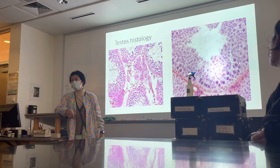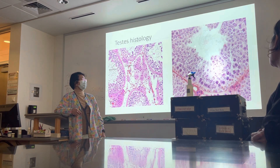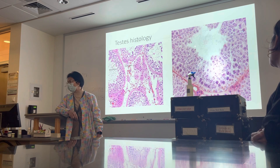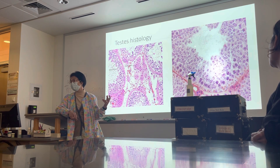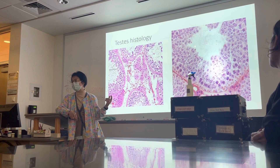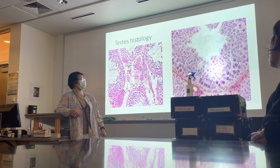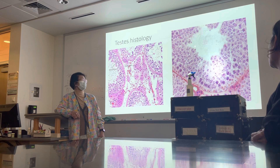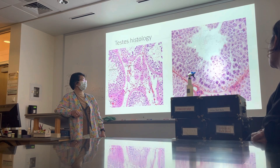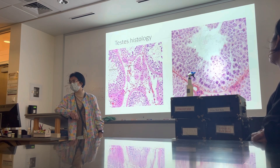In the lab exam, if the pointer is pointing there, you know the questions are related to the two cells in there — the sperm cells and the Sertoli cells. I am not going to ask you to identify the Sertoli cells because it's difficult. But maybe I'll point to these cells with the tail — you should know that those are sperm cells. Those are all your sperm cells, the spermatocytes undergoing meiosis.